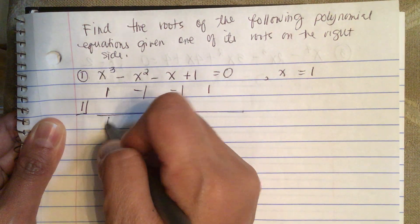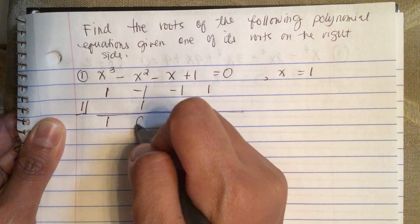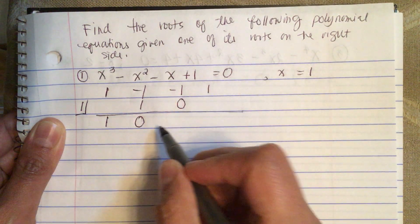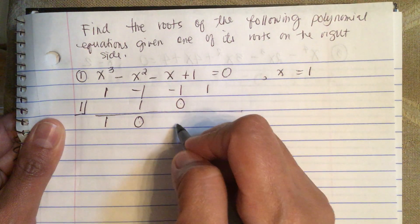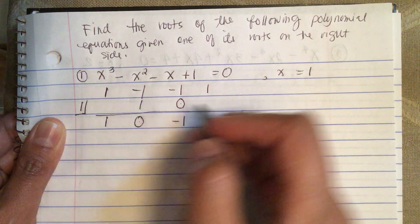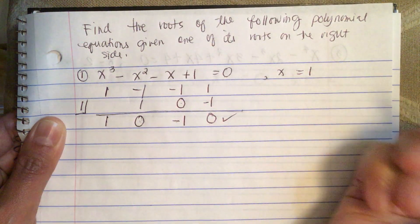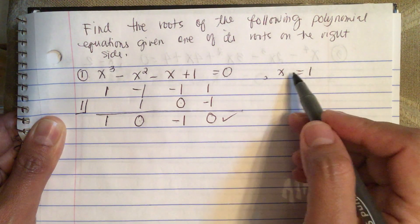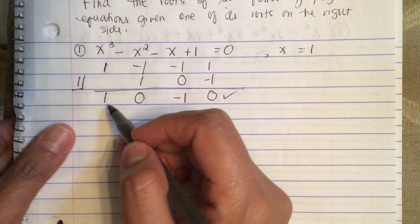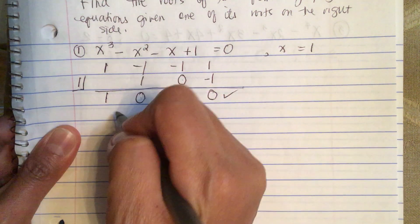We bring down the 1, and then 1 times 1 is 1, and then this is 0. Zero times 1 is 0, then we have minus 1, and minus 1 times 1 is minus 1, and we get 0. So it is indeed confirmed that x equals 1 is one of its roots.